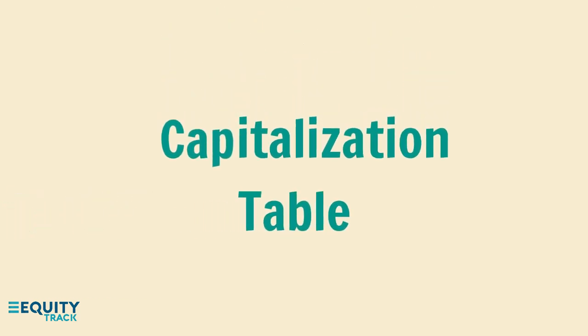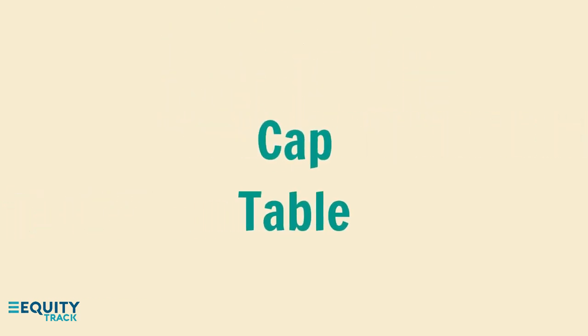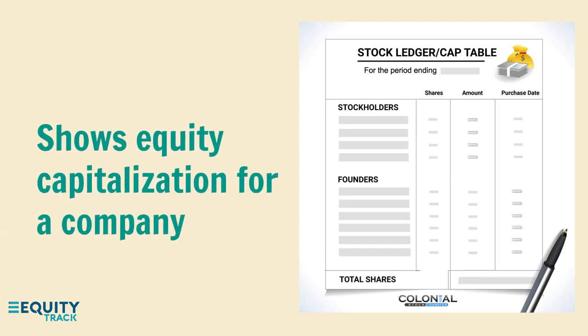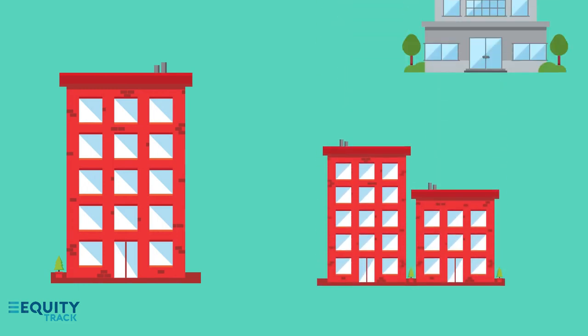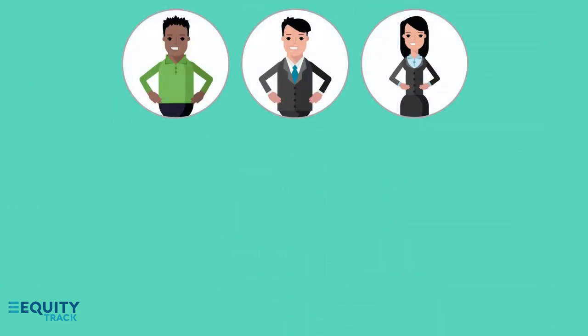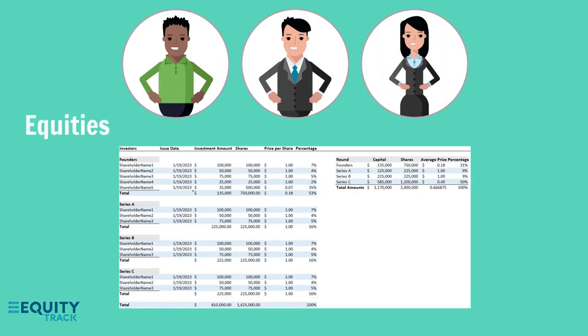A Capitalization Table is usually shortened to Cap Table. This is a spreadsheet that displays all of the equity capitalization for a company. It is commonly used by businesses in the early stages, but any type of company can take advantage of it. A Capitalization Table shows you a detailed breakdown of shareholder equity and securities.